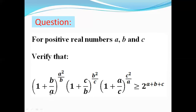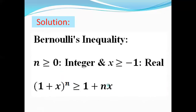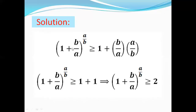We will use Bernoulli's inequality for each term of our problem. We start with (1 + b/a)^(a/b). Applying Bernoulli's inequality, we can write (1 + b/a)^(a/b) is greater than or equal to 1 + (b/a)·(a/b). Here we can cancel out b and b, and a and a, so we get 1. Therefore (1 + b/a)^(a/b) is greater than or equal to 1 + 1, which is 2.